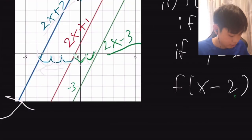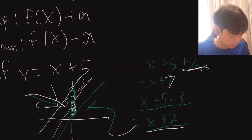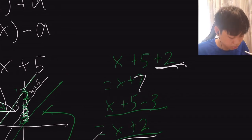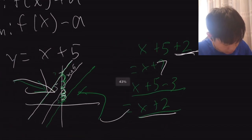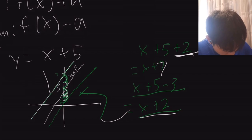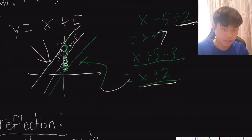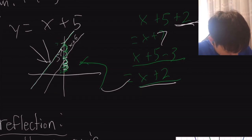So that is 2 units to the right. To move a graph up or down: moving up uses f(x)+a, and down uses f(x)-a. If y equals x+5, adding a=2 gives x+7, which is 2 units upward. Subtracting 3 gives x+2, which is 3 units downward.